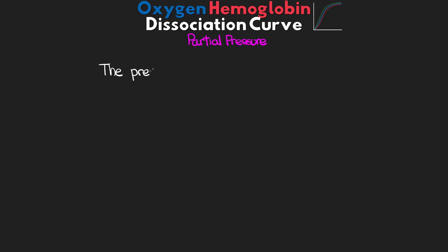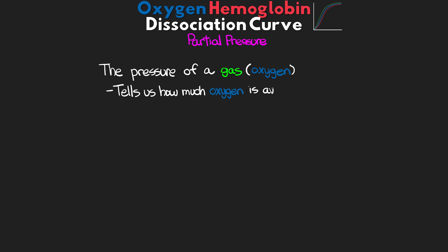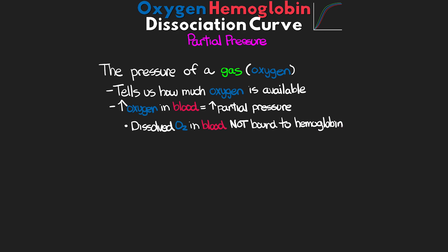The next thing we need to talk about is partial pressure. At its most basic level, this is the pressure of a gas — in our example, the gas is oxygen. The partial pressure tells us essentially how much oxygen is available. The more oxygen that's available to the blood, the higher the partial pressure. This partial pressure is going to be roughly equal to the amount of oxygen dissolved in the blood but not bound to hemoglobin, and this is what's reflected as our PaO2 on our ABG. While dissolved oxygen does contribute to overall oxygen availability, it contributes just a fraction compared to hemoglobin.